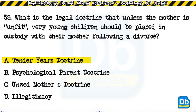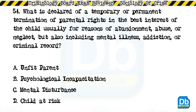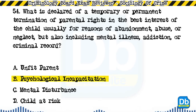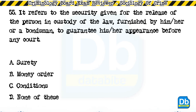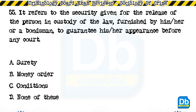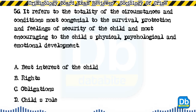Question 54: What is declared of a temporary or permanent termination of parental rights in the best interest of the child, usually for reasons of abandonment, abuse, or neglect, but also including mental illness, addiction, or criminal record? a) unfit parent, b) psychological incapacitation, c) mental disturbance, d) child at risk. The answer is B, psychological incapacitation. Question 55: It refers to the security given for the release of a person in custody of the law, furnished by him/her or a bondsman to guarantee appearance before any court: a) surety, b) money order, c) conditions, d) none of these. The answer is D, none of these.